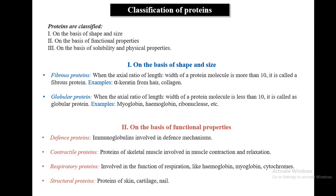Proteins are classified on the basis of size and shape, functional properties, and physical properties and solubility. Based on shape and size: fibrous proteins have an axial ratio of length to width greater than 10 — for example, alpha-keratin found in hair, and collagen. Globular proteins have an axial ratio of length to width less than 10 — for example, hemoglobin (which carries oxygen), myoglobin, and ribonuclease.